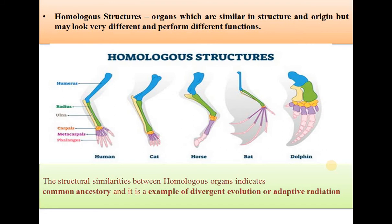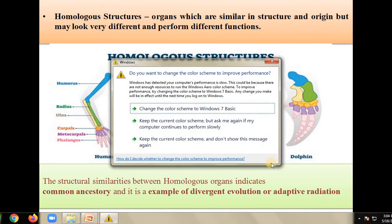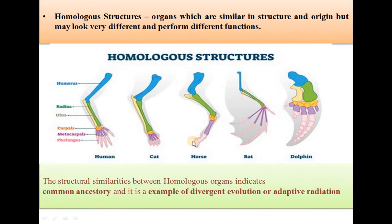The answer lies in homologous structures and analogous structures. Homologous structures are organs which are similar in structure and origin but may look very different and perform different functions. That means homologous organs have a similar structure but functionally they are all different.